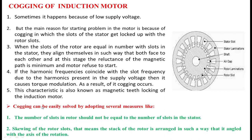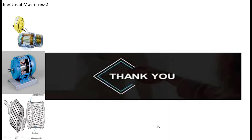Cogging can be easily avoided by adopting several methods: the number of slots in the rotor should not be equal to the number of slots in the stator. Another method is skewing of the rotor slots — the rotor stack is arranged so that it is angled with the axis of rotation. Thank you very much. If you have any doubt, you can ask me directly or in the comment box of my YouTube channel, and I am always welcome to answer all your questions.